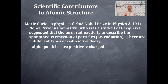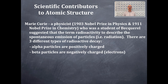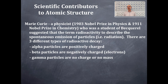The three types of radioactive decay are: alpha particles, which are positively charged because they are a helium nucleus; beta particles, which are negatively charged and are effectively electrons; and gamma particles, which have no charge and no mass. Here is a beautiful picture of Marie Curie.